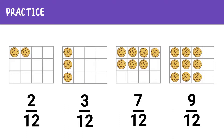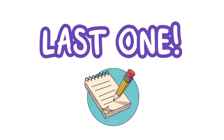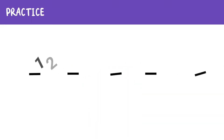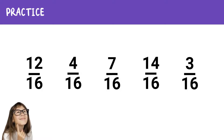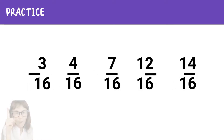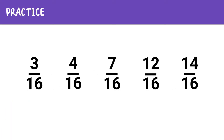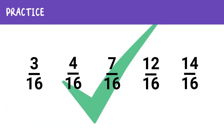Are you getting the hang of this yet? Let's try one last one, but this time we'll skip the visuals and just look at the numbers. Ready? Here are 5 fractions: 12 sixteenths, 4 sixteenths, 7 sixteenths, 14 sixteenths, and 3 sixteenths. The answer is 3 sixteenths, 4 sixteenths, 7 sixteenths, 12 sixteenths, then 14 sixteenths. Since the denominators are the same, we focus on the numerators. See how quick and easy that was?